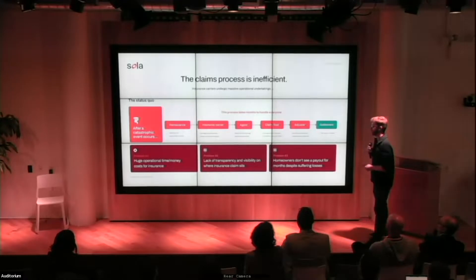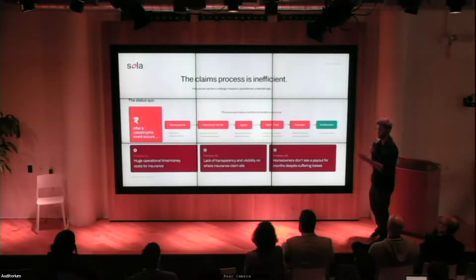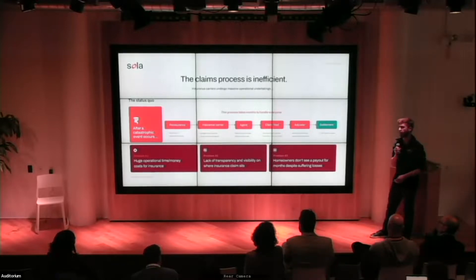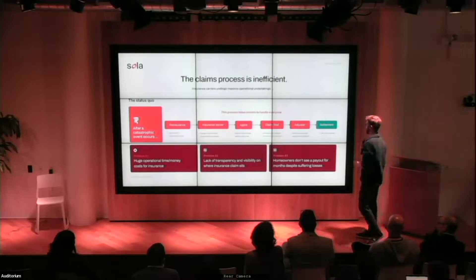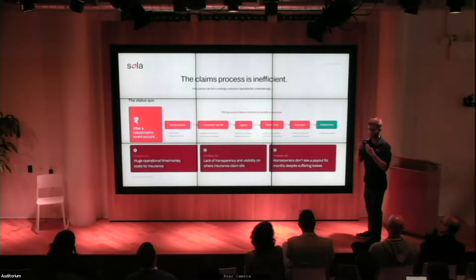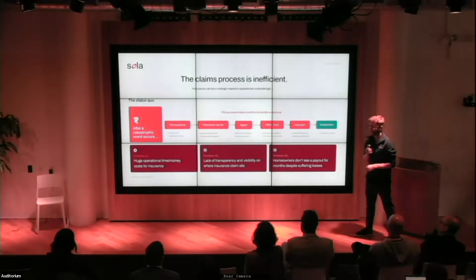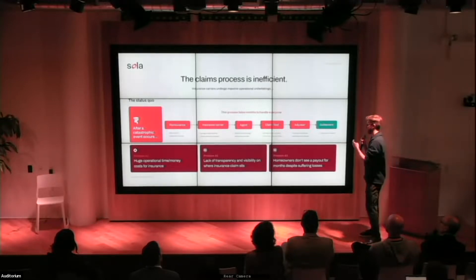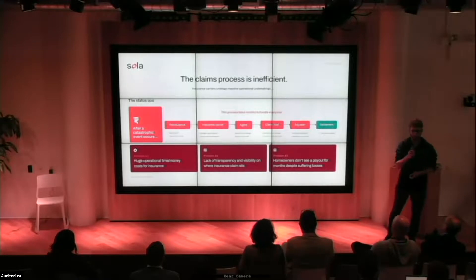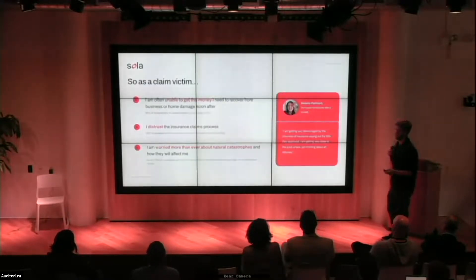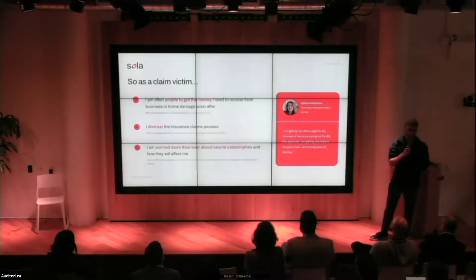The claims process is extremely inefficient. There are many players involved — from reinsurance to the insurance carrier, to the agent, to the claim filed with the FNOL process, to the adjuster who visits the property multiple times — and often homeowners aren't even getting the proper payment they need. This leads to a huge operational time cost for insurers and an inefficient, opaque process for homeowners. As a result, homeowners don't receive the payout they need in a timely fashion, leading to a distrust in the claims process — and more people than ever are worried about natural catastrophes.